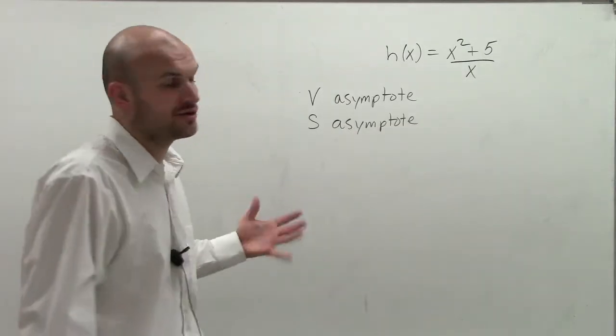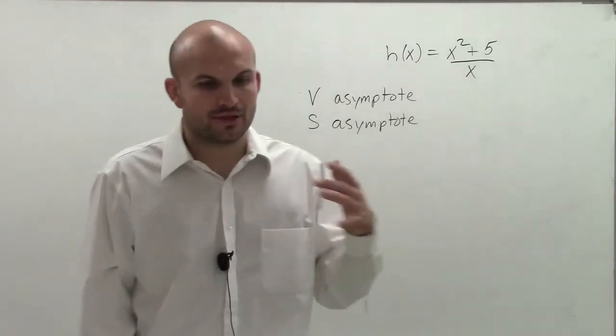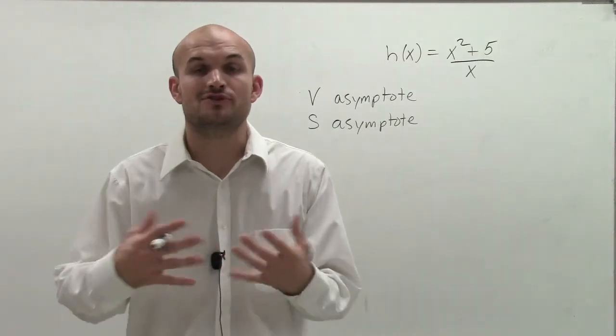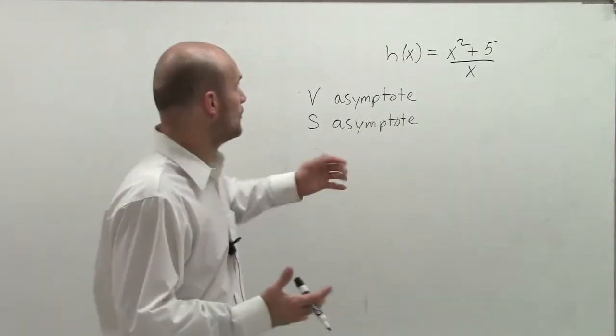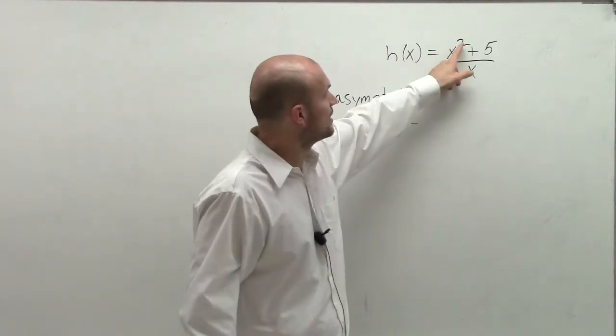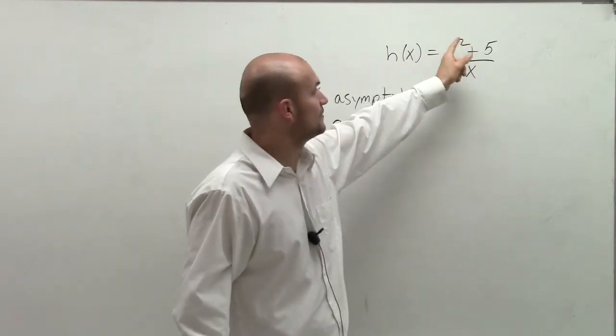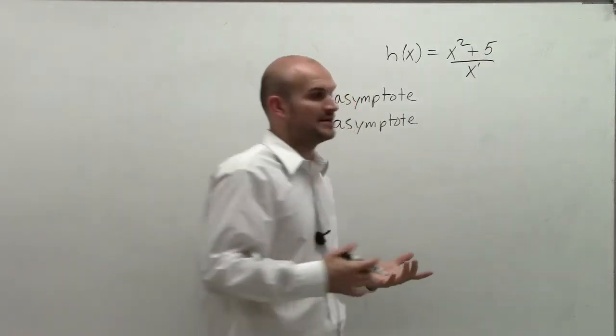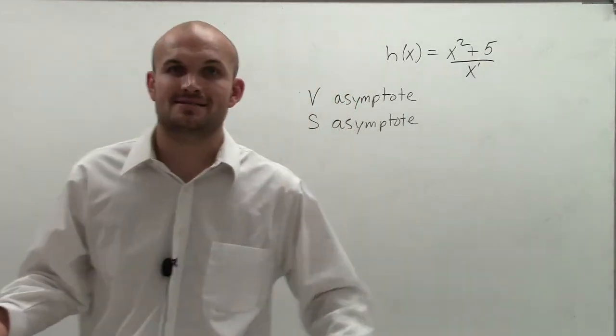So when talking about slant and horizontal asymptotes, when we looked at the horizontal asymptote test, we determined that there's no horizontal asymptote when we have an exponent of our numerator which is going to be larger than our exponent of our denominator. So that said, we had no horizontal asymptote.